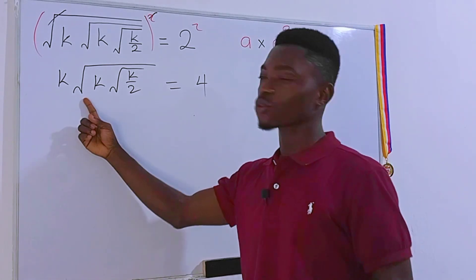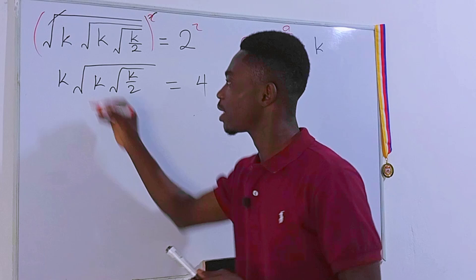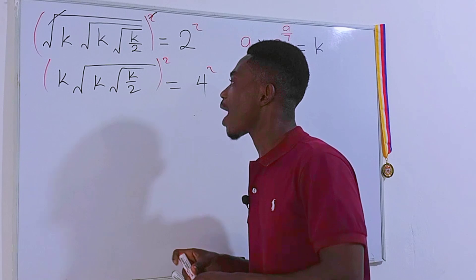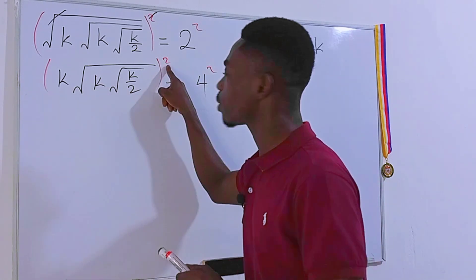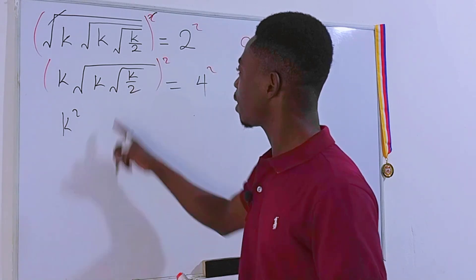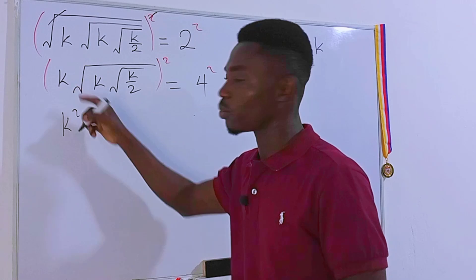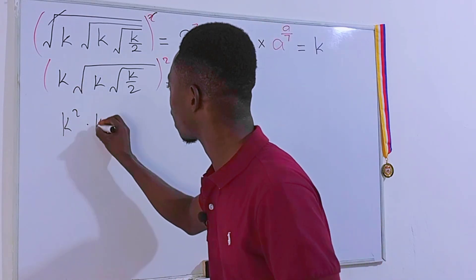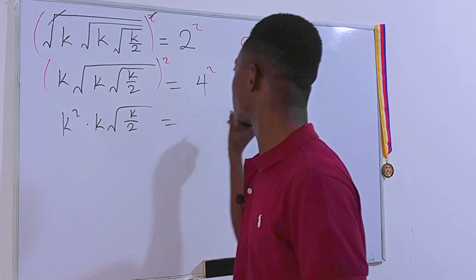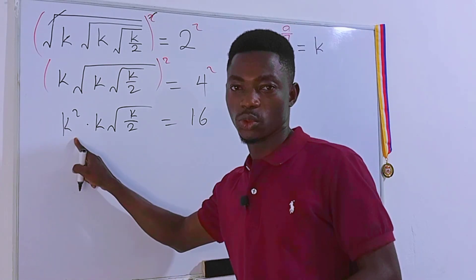We still have a square root here, so it will be better for us to raise each side of the equation to the second power once again. We get k to the power 2 — the square cancels out the square root — and we're left with k squared times the square root of k, divided by 2, equal to 16.